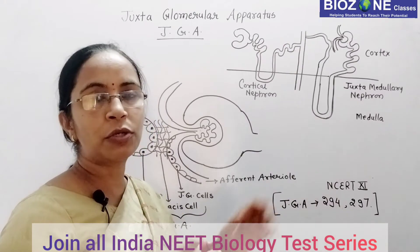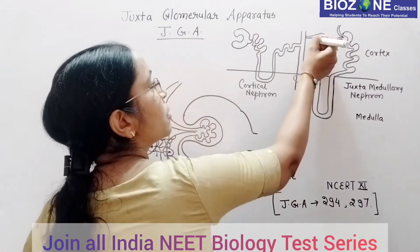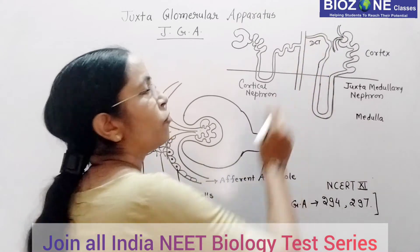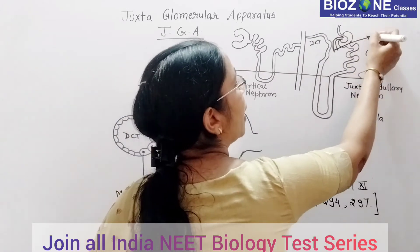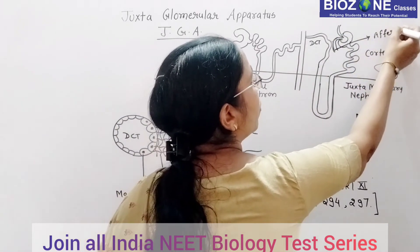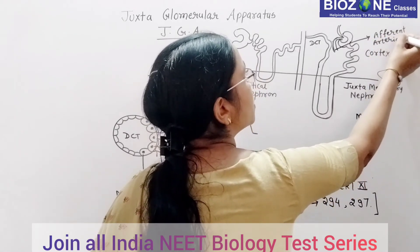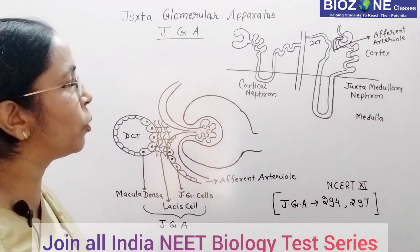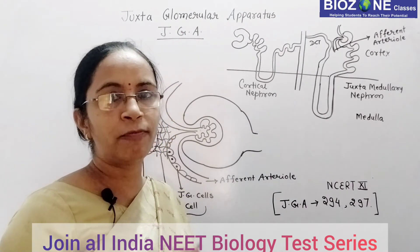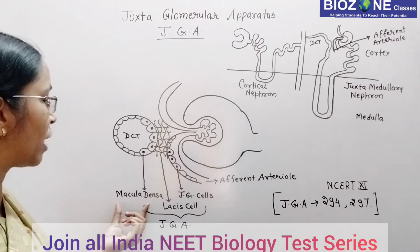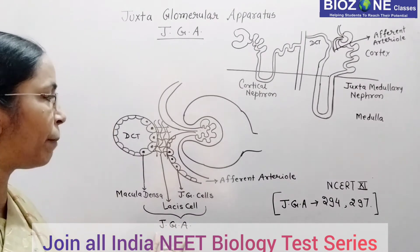When we study the structure of the juxtamedullary nephron, we find that sometimes the DCT — the distal convoluted tubule — comes in contact with the afferent arterioles. Whenever this DCT comes in contact with afferent arterioles, it results in the formation of a special apparatus of three cells: macula densa, lacis cells, and JG cells. This combined structure is called the JG apparatus.